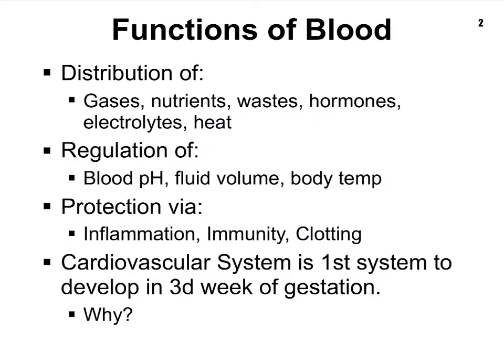The blood has many functions. You already know that it carries around oxygen, collects carbon dioxide from our metabolically active tissues, and also wastes. It also distributes nutrients so that our tissues can produce ATP. But our blood also carries around other important chemicals like electrolytes, hormones, and proteins involved in clotting, which we call clotting factors.